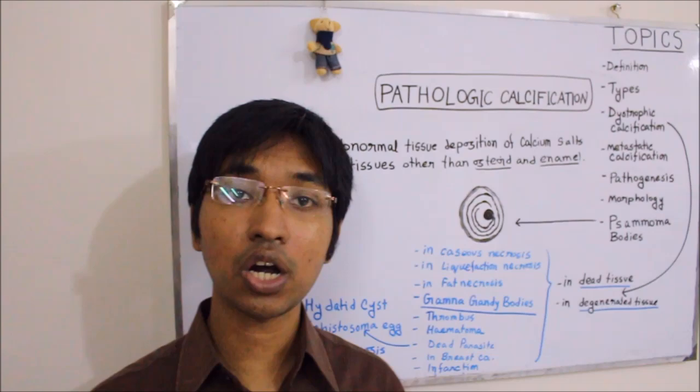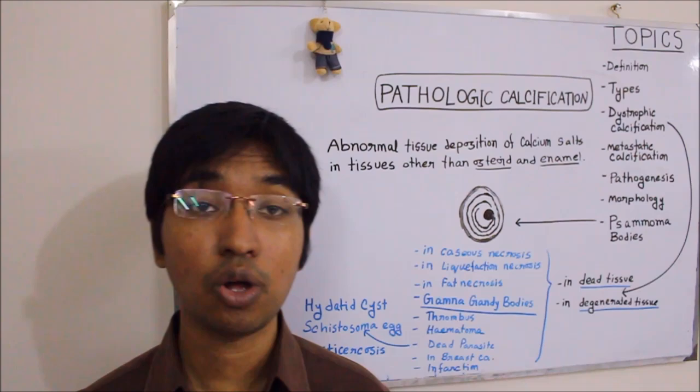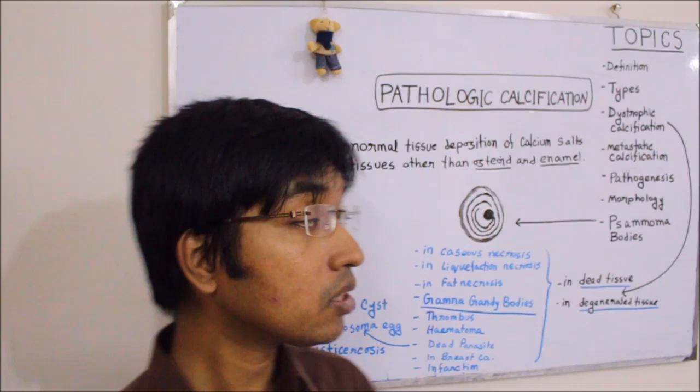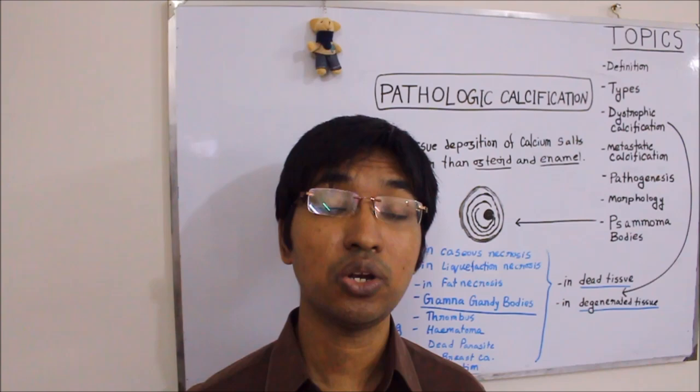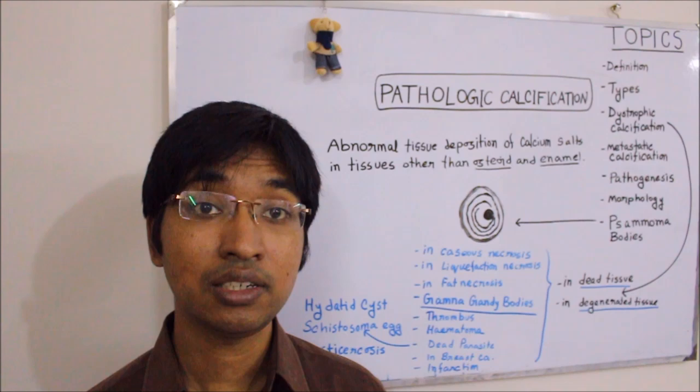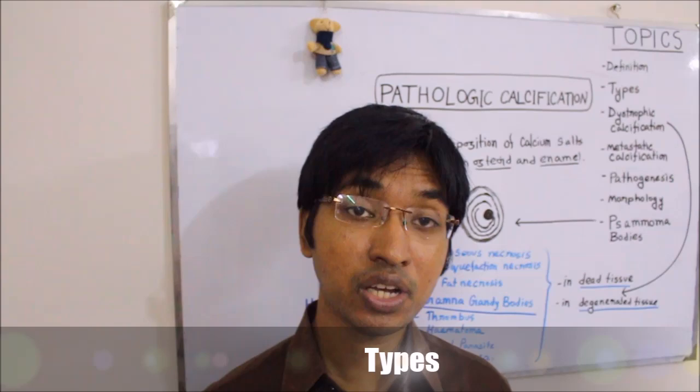Let me explain that. Normally, calcification does occur in the osteoid of our bones and also in the enamel of teeth — that is normal calcification. However, when calcium salts are getting deposited in tissues other than osteoid and enamel, that is known as pathologic calcification. Now that we have defined pathologic calcification, we will move on to discuss its types.